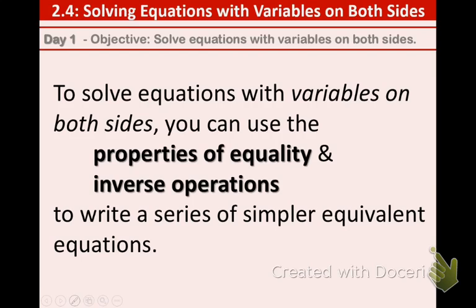To solve equations with variables on both sides, you can use the properties of equality - addition, subtraction, multiplication, and division. We've learned this in the past chapter. And also inverse operations. Remember another word for inverse is opposite. We will use these two things to write a series of simpler equivalent equations. So that just means we're simplifying and combining like terms.